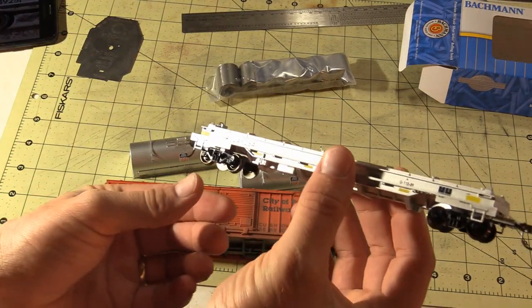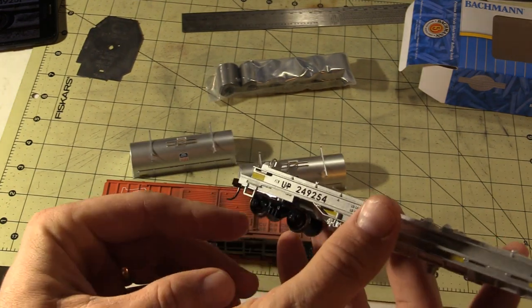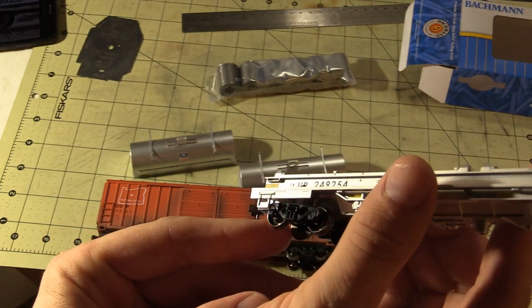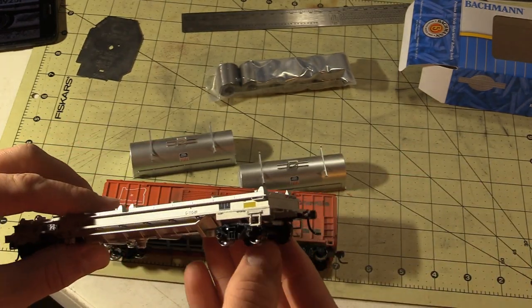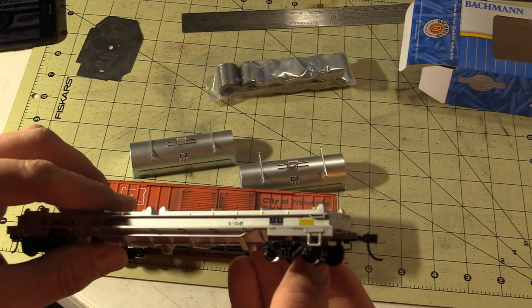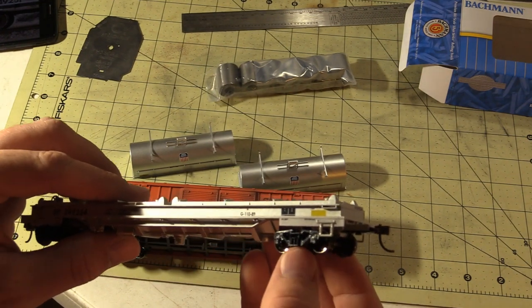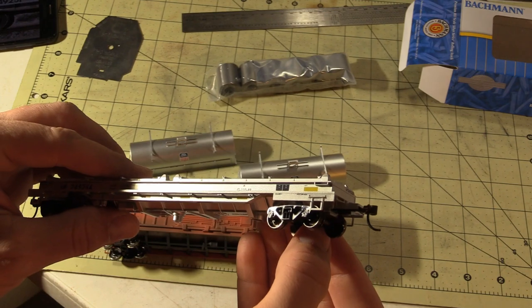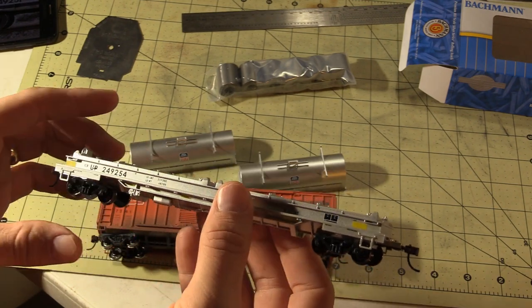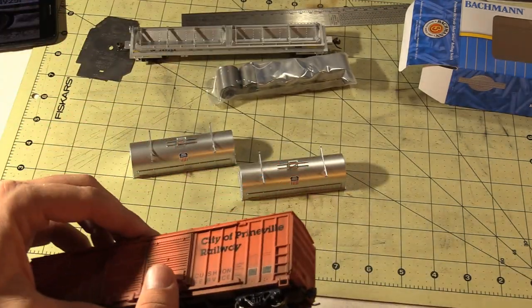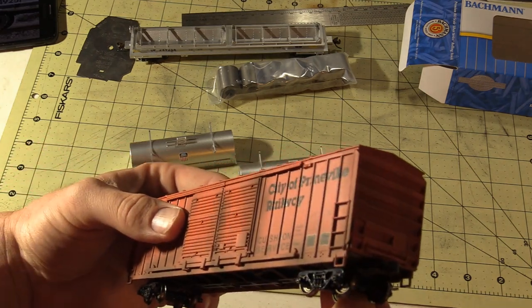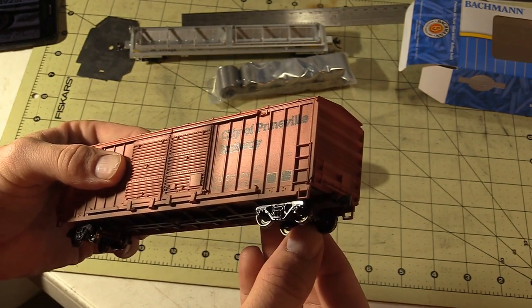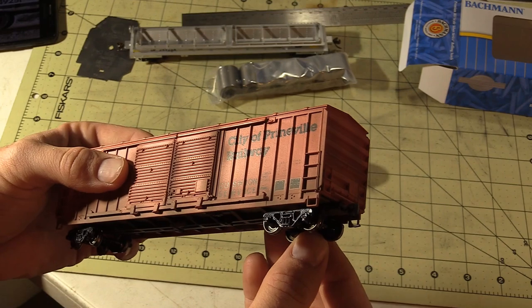Alright, so I do notice that the trucks on the car are not exactly like what the prototype might have. If we can see right here, maybe like that, you can see how the trucks do. They're a barber design. Barber, I don't know the different types of trucks. They are 100 ton trucks because they've got the three springs, but a slightly different casting than what would probably be on the prototype today. An example is an Athern Blue Box truck we can see right there.